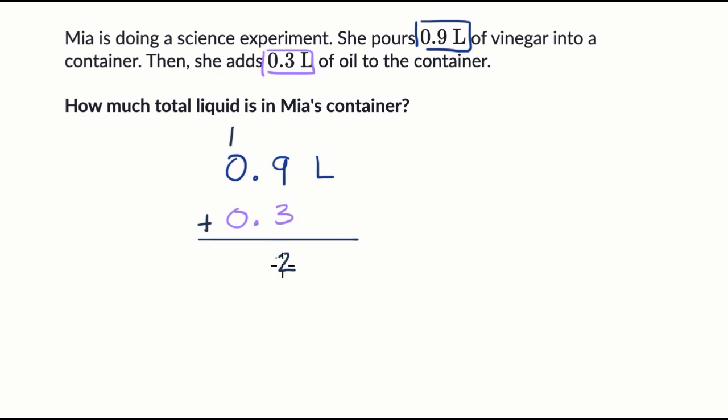Another way, sometimes people would say, write the two, carry the one, regroup the one. But the reason why you're doing that, this is 12 tenths, and 12 tenths is the same thing as two tenths and a whole. And then I have one whole and no other wholes, so it's just going to be one whole right over there, and then my decimal right over there, and I am done.